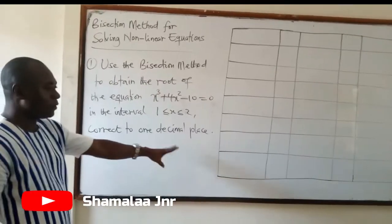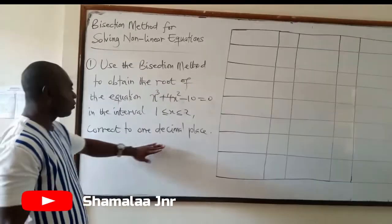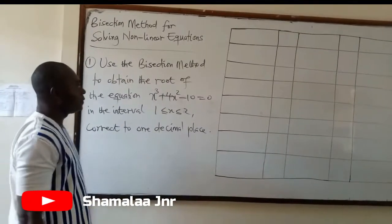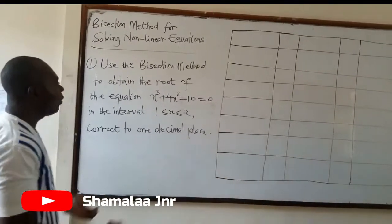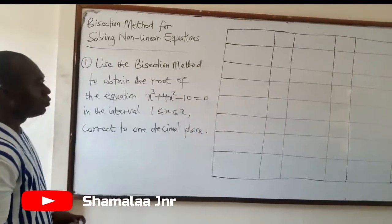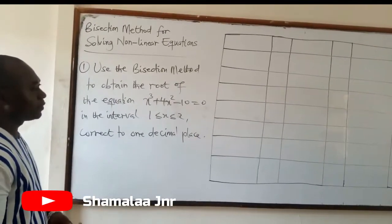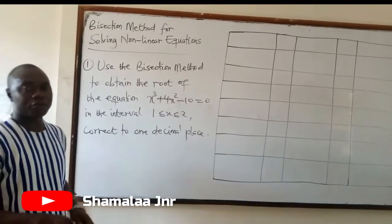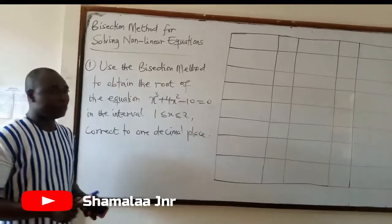Correct to one decimal place — you have to correct your answer to one decimal place. Now, how is this done? To do this, you have to first of all construct a table.